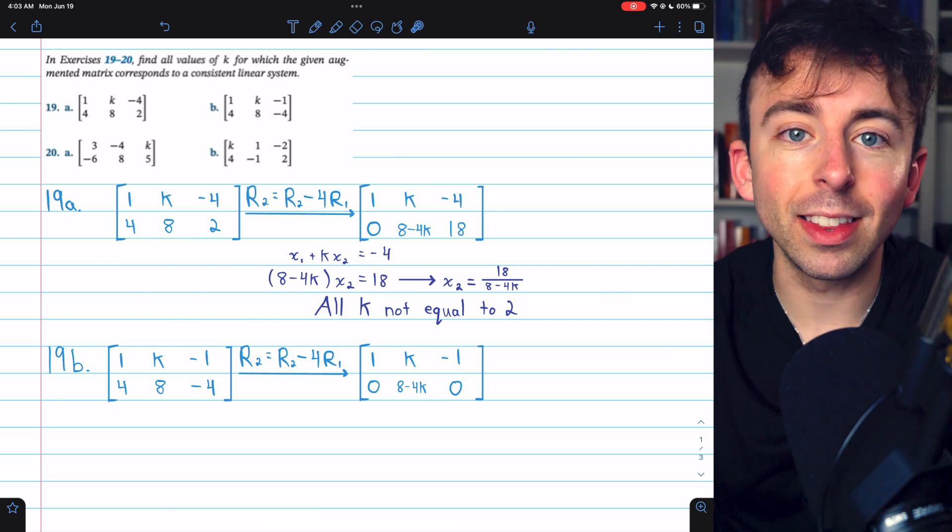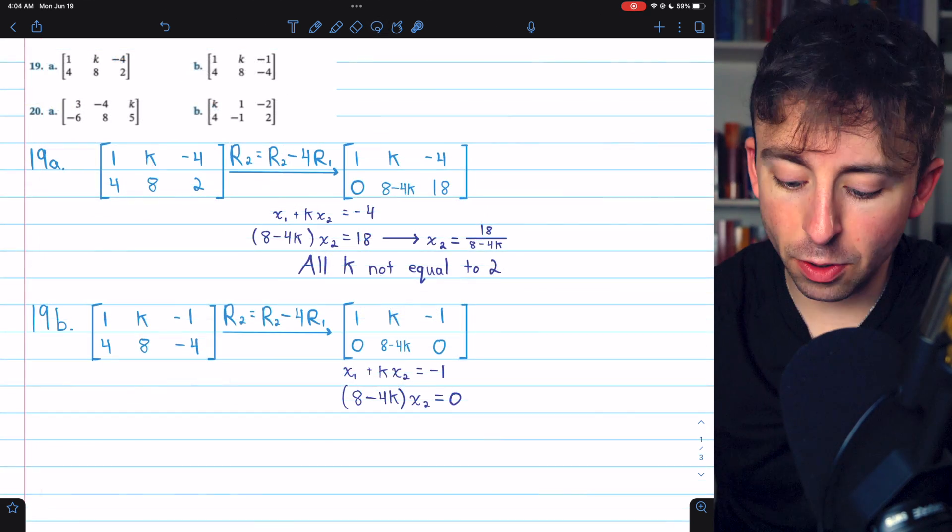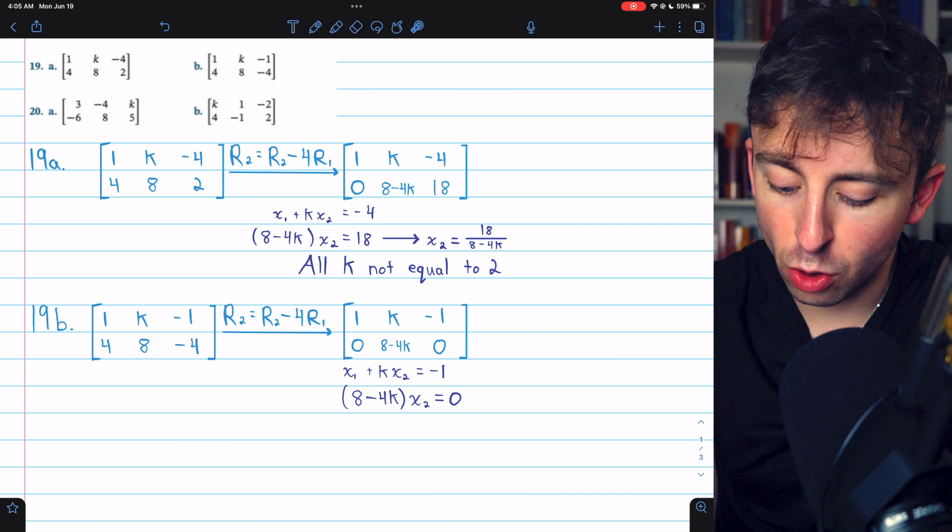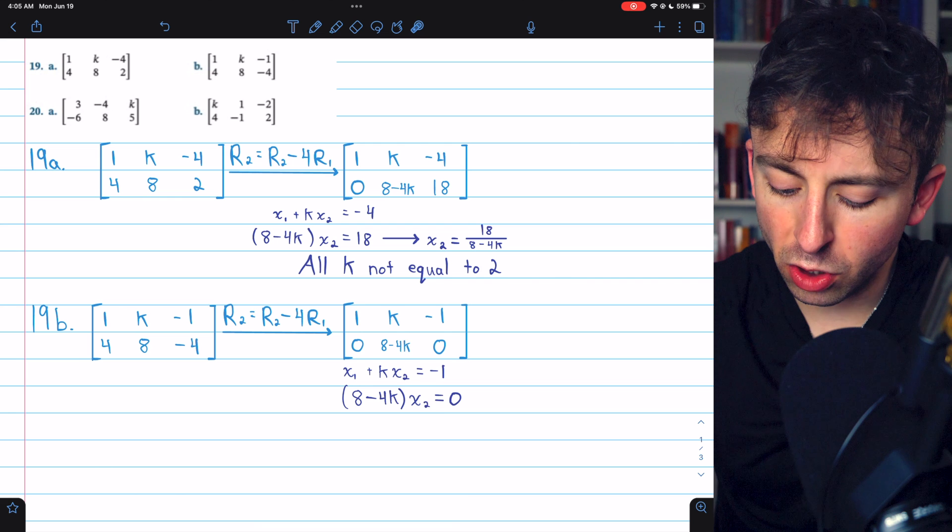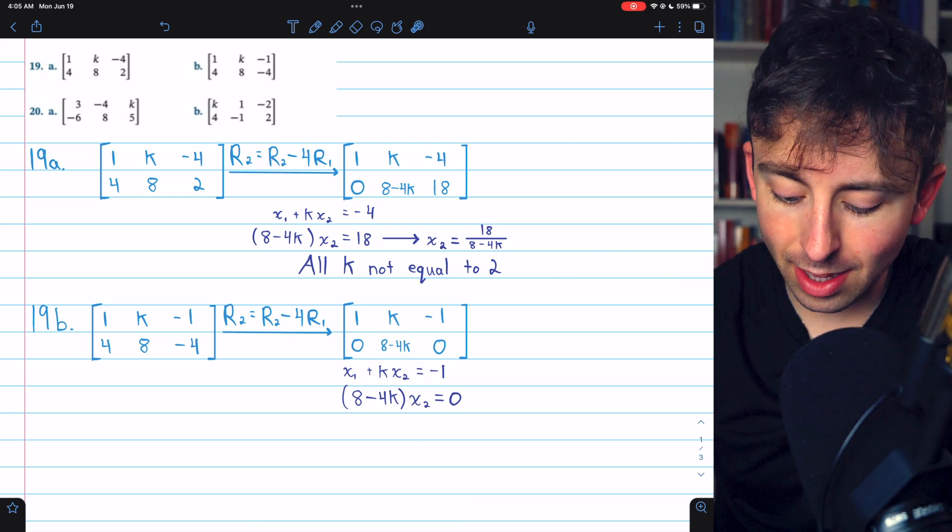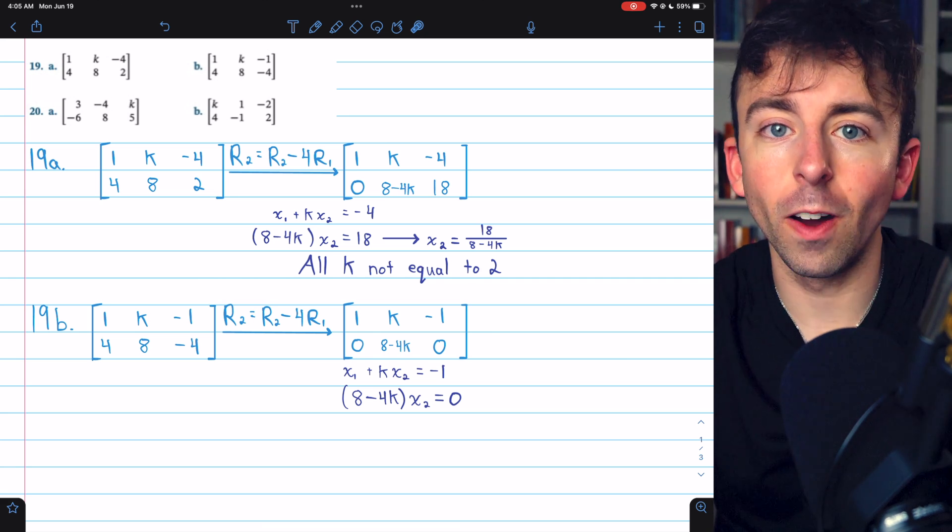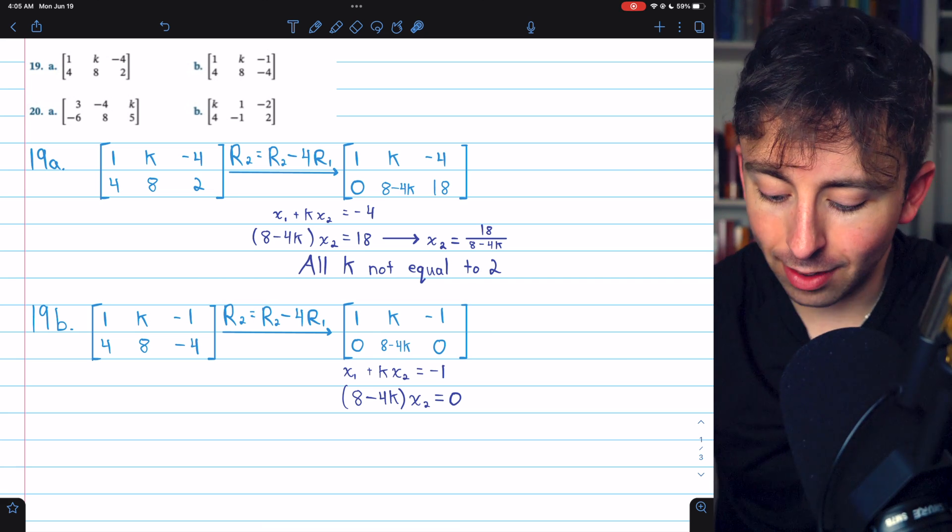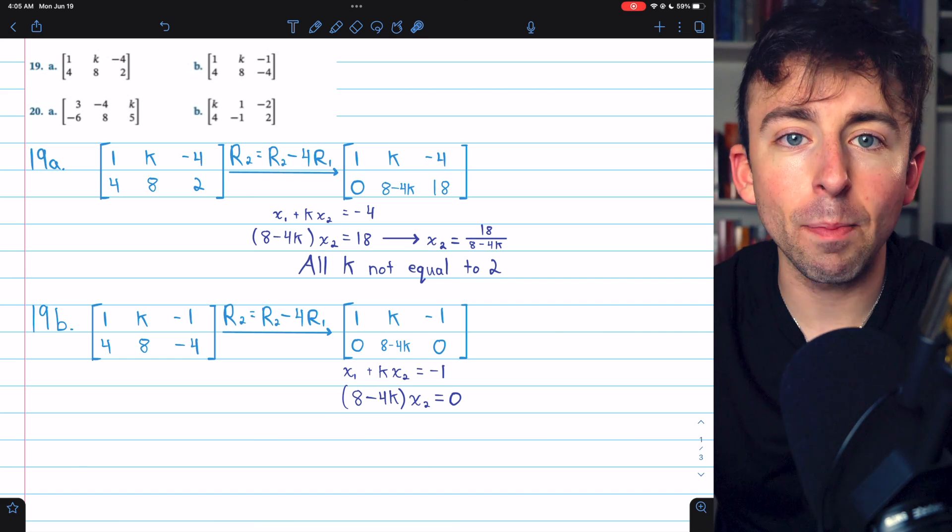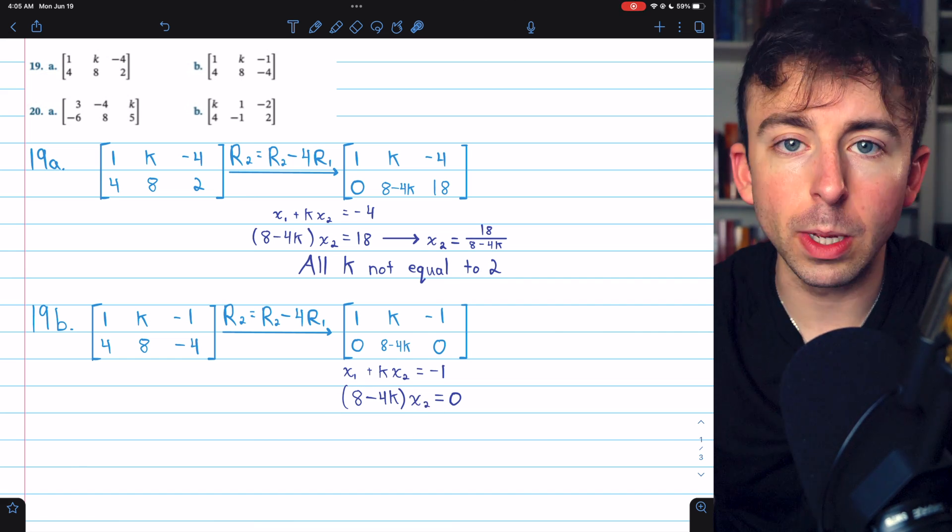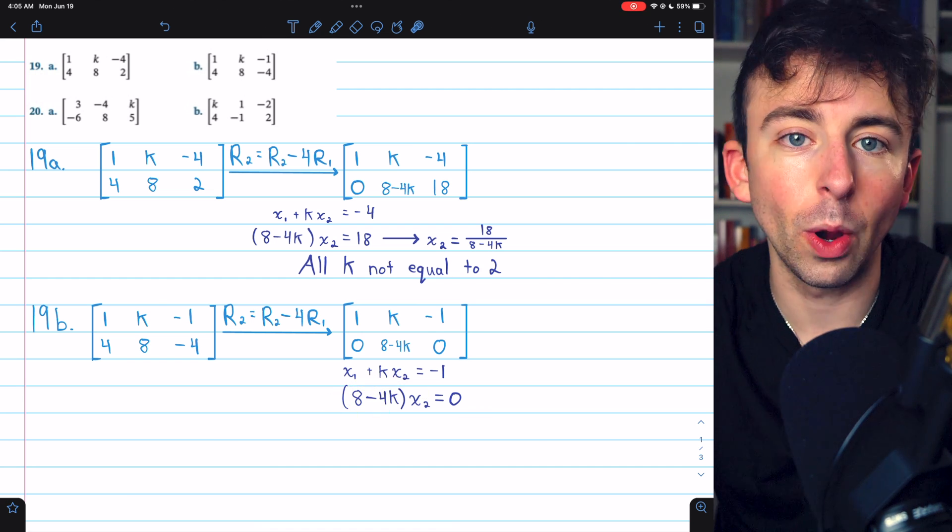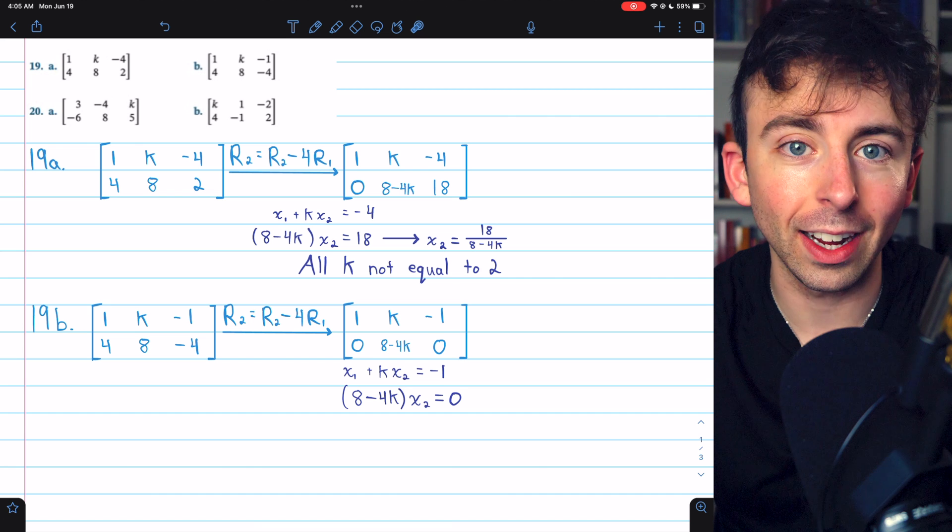Now we can write the linear system that this represents. Row 1 gives us x1 plus kx2 equals negative 1, and row 2 gives us 8 minus 4k times x2 equals 0. We can see that this second equation doesn't impose any restriction on k. Whatever k is, x2 could be 0, and that would make the equation true. If k happens to be 2, then x2 could be anything at all, since if k was 2, this would be 0, thus forcing this equation to be true, no matter what x2 is.